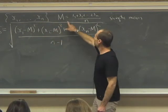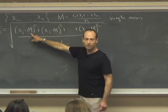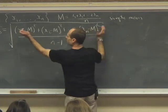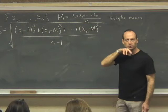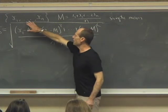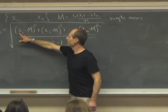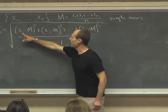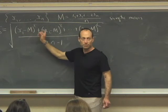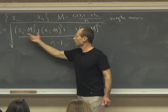So if instead of plugging in the sample mean here, I plugged in the mean of the box, then what would happen to this sum of squares? Would it get bigger or smaller? I've got a list of numbers that are sampled from the box. In one case, I'm subtracting from that sample the mean of the sample. In the other case, I'm subtracting from that sample the mean of the box. Which is going to give a larger sum of squares?